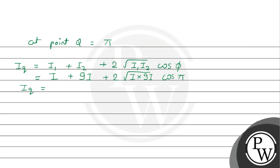Now we'll find intensity at point Q. At point Q, the phase difference is π. The intensity at point Q is equal to I₁ + I₂ + 2√(I₁ × I₂) × cos φ.